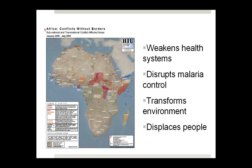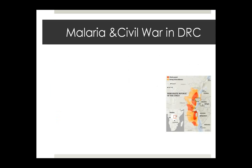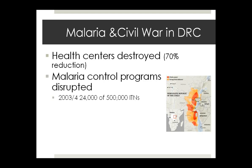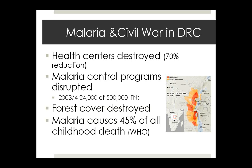Here is a map showing where armed conflicts occur in Africa, where 90% of malaria is occurring in 2009. Warfare weakens health systems, disrupts malaria control, transforms the environment, and displaces populations. In eastern Zaire or eastern Congo, service centers were destroyed, many intentionally during the civil war. In 2003 and 2004, an effort to distribute 500,000 ITNs across eastern Congo resulted in only 24,000 being distributed due to the disruption. Large areas of forest cover were destroyed, opening areas for Anopheles gambiae breeding, and malaria caused an estimated 45% of childhood deaths compared to 25% elsewhere.